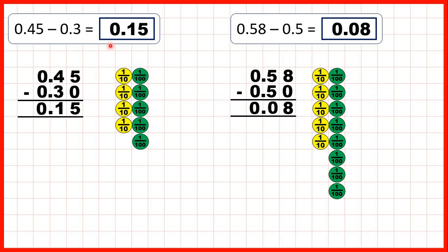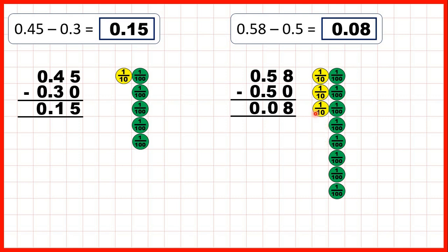We can also show the subtraction using place value counters. With 0.45, we have 4 tenths and 5 hundredths. Subtracting 0.3 means taking away 3 tenths, so that leaves us with 1 tenth and 5 hundredths. Then we had 0.58, so 5 tenths and 8 hundredths, and subtracting 0.5 means taking away 5 tenths. That leaves us with just 8 hundredths.